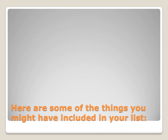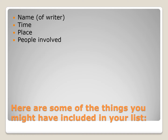Here are some of the things that you might have included in your list: the name of the writer, your name; the time of the event; the place of the event; and the people involved in the event. Some organizations do not allow you to include the names of people because of privacy concerns, so you may just refer to their positions — a nurse, a client, a patient, or a health care aide — rather than using specific names.